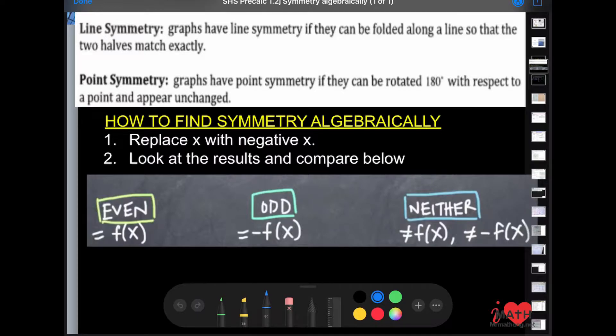Hey guys, let's figure out how to find symmetry algebraically. Line symmetry is where graphs have a line of symmetry if they can be folded along the line so that the two halves match exactly.